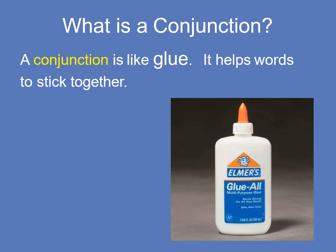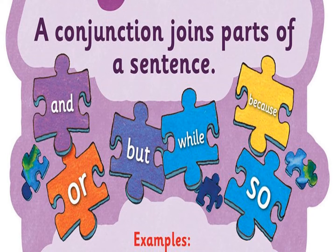What is the conjunction? A conjunction is like glue. It helps words to stick together. A conjunction joins parts of a sentence. For example, these are a few conjunctions: and, or, but, while, because, so.